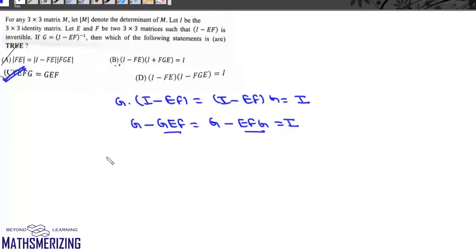Now if you look at this option A, it is I minus FE into determinant of FGE. Now this is determinant of IFE into determinant of FE into determinant of G. Now from this first one, if we take this determinant, we can write determinant of I minus EF into determinant of G, it is equal to one. So this is equal to determinant of FE, that means this option A is also correct. Now we look at this option B.